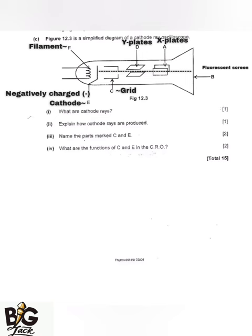Question one asks: what are cathode rays? Cathode rays are the emission of electrons from the cathode to the anode.